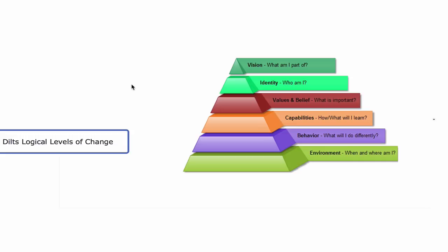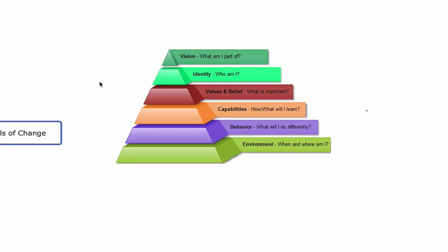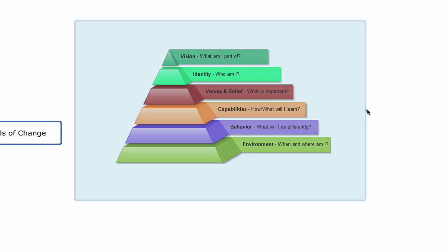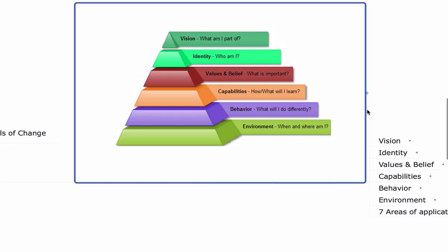On the surface, this model looks very simple. It's just a pyramid with six layers: vision, identity, values and beliefs, capabilities, behaviors, and environment. I'm going to share my own personal applications for my successes in my business, my personal life, and with my clients.